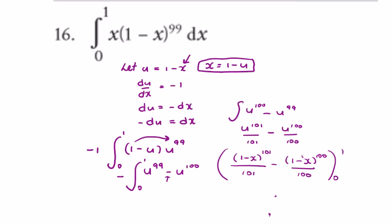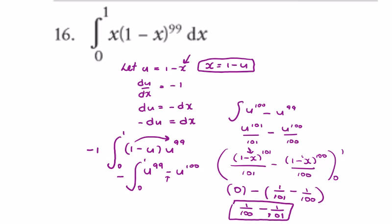Putting 1 in gives 1 minus 1, which is 0, so the upper limit contributes nothing. Putting 0 in gives 1 to the power of 101, so we get 0 minus 1 over 101 minus 1 over 100. The minus in front takes effect, giving us 1 over 100 minus 1 over 101, which works out to 101 minus 100 divided by 100 times 101, giving 1 over 10100.